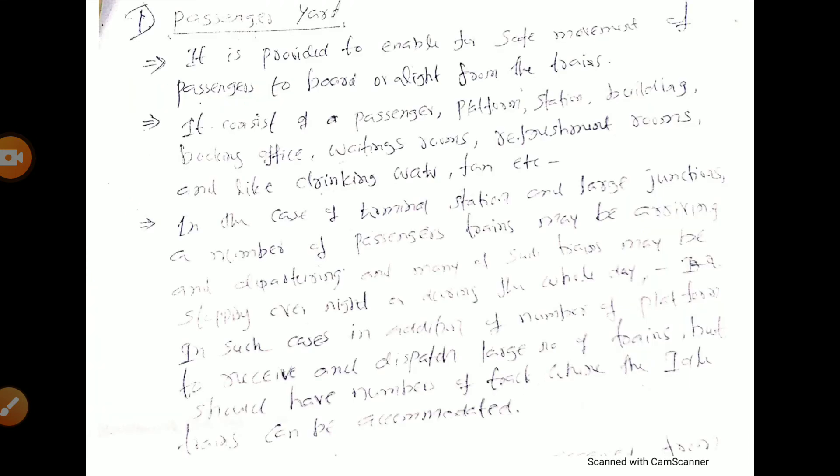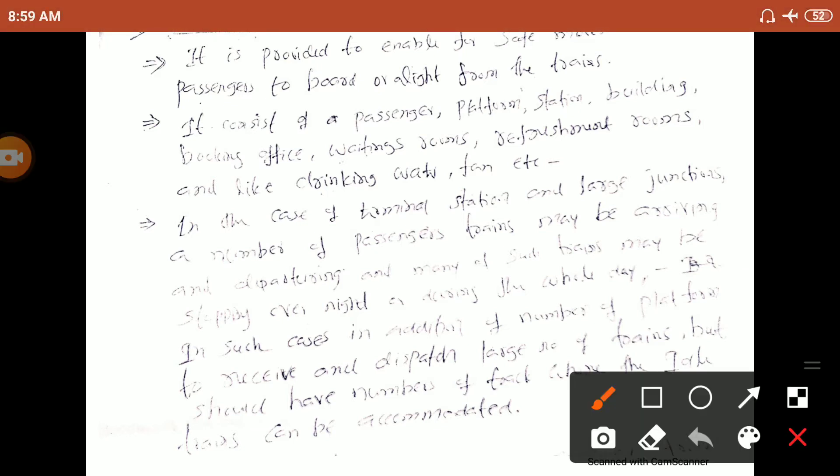A passenger yard is provided to enable the safe movement of passengers. It is provided for the conservation and movement of passengers to board and alight from trains. It consists of passenger platforms and station facilities.